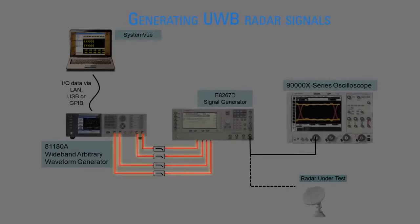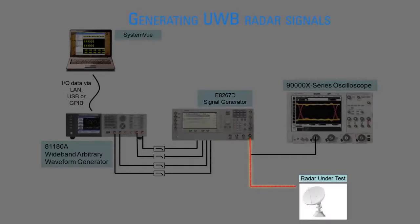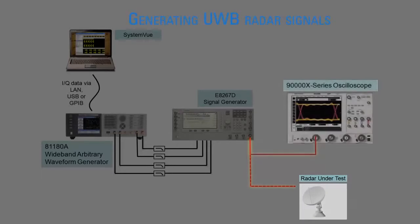The output differential IQ signals of the arbitrary waveform generator are modulated by the Agilent E8267D PSG vector signal generator to create an X, KU, or KA band signal. This signal can be used directly as an input to test a radar receiver.